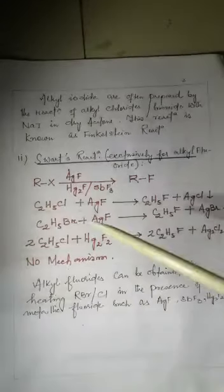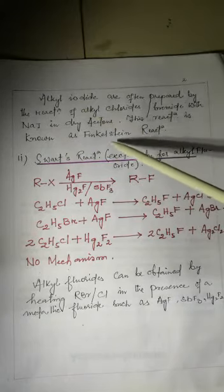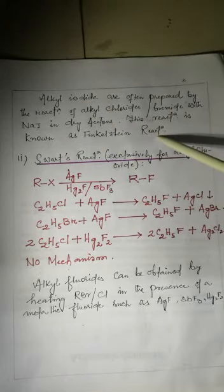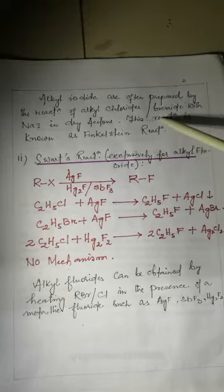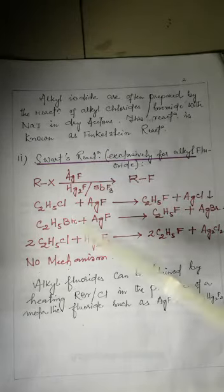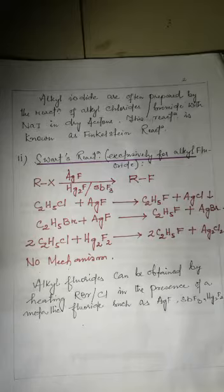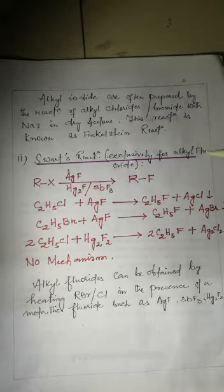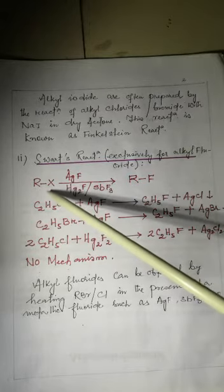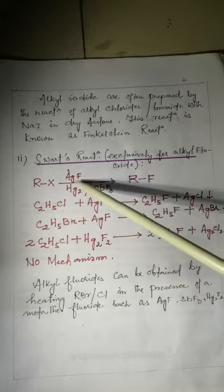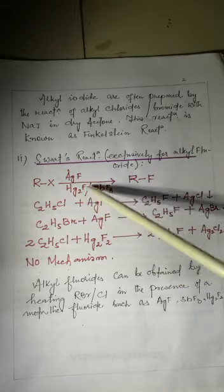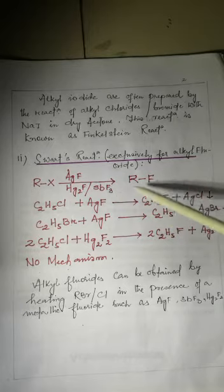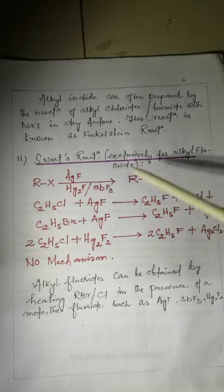That completes the Finkelstein reaction definition. The second method is the Swarts reaction, which is exclusively for the preparation of alkyl fluorides. In this reaction, alkyl halide reacts in the presence of silver fluoride, mercury fluoride, or antimony trifluoride to give alkyl fluoride.